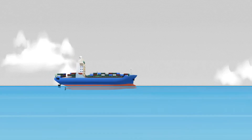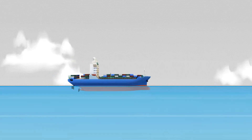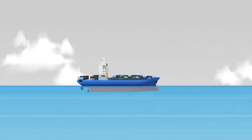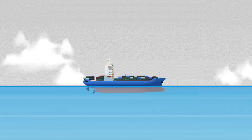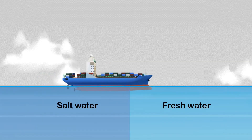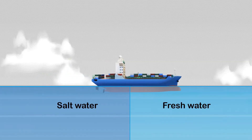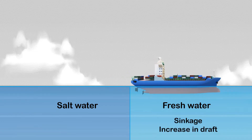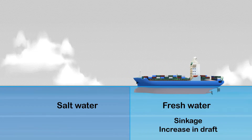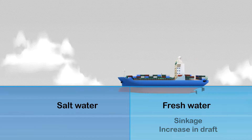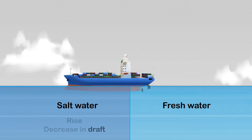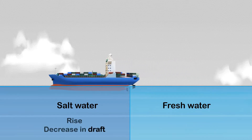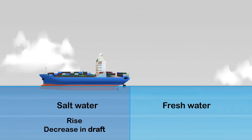As the ship moves through waters of different densities, her draft will change accordingly. When sailing from saltwater to freshwater, a sinkage occurs, causing the ship's drafts to increase. On the other hand, sailing from freshwater to saltwater, the ship will rise, resulting in a decrease in her draft.